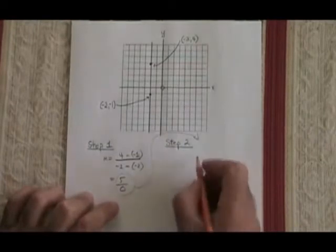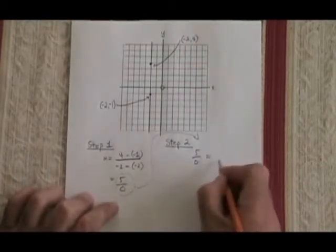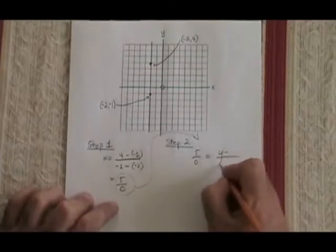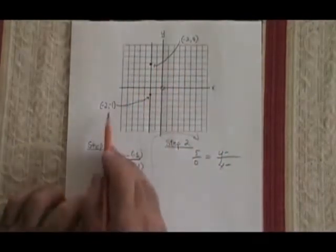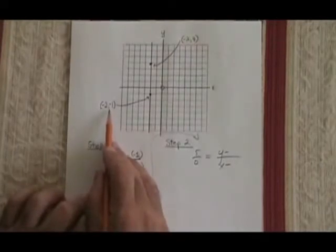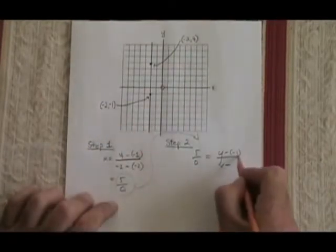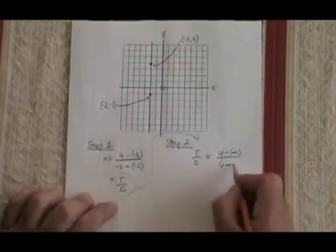In step 2, I take the slope formula and replace m with 5 over 0. I put my y minus and my x minus, and then I take one of the points, whichever one I want. This time, I'm going to use this point here. So my y is negative 1, and my x is negative 2.